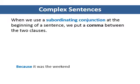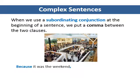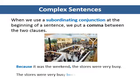When we use a subordinating conjunction at the beginning of a sentence, we put a comma between the two clauses. When the subordinating conjunction is in the middle of the sentence, we do not use a comma.